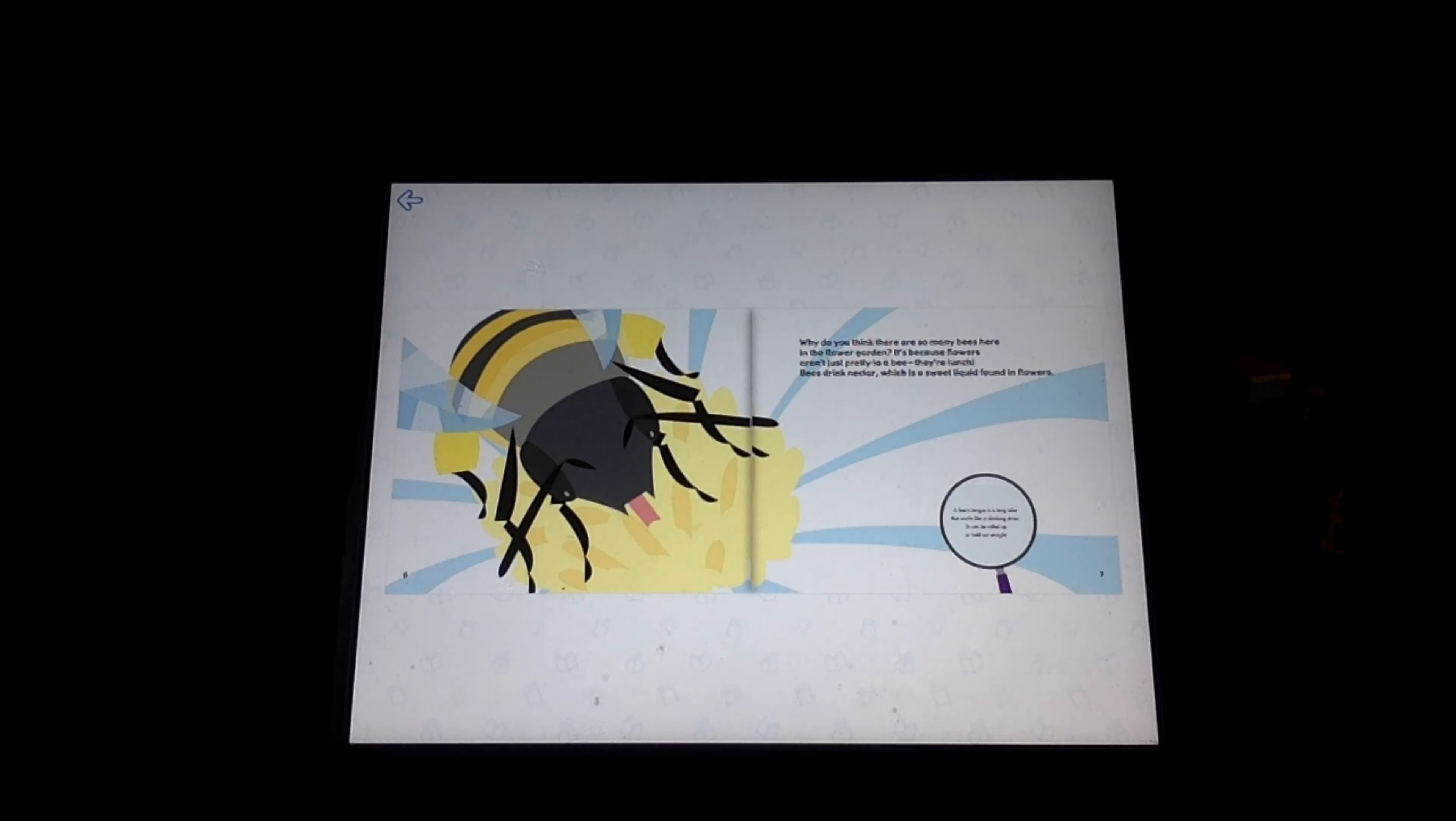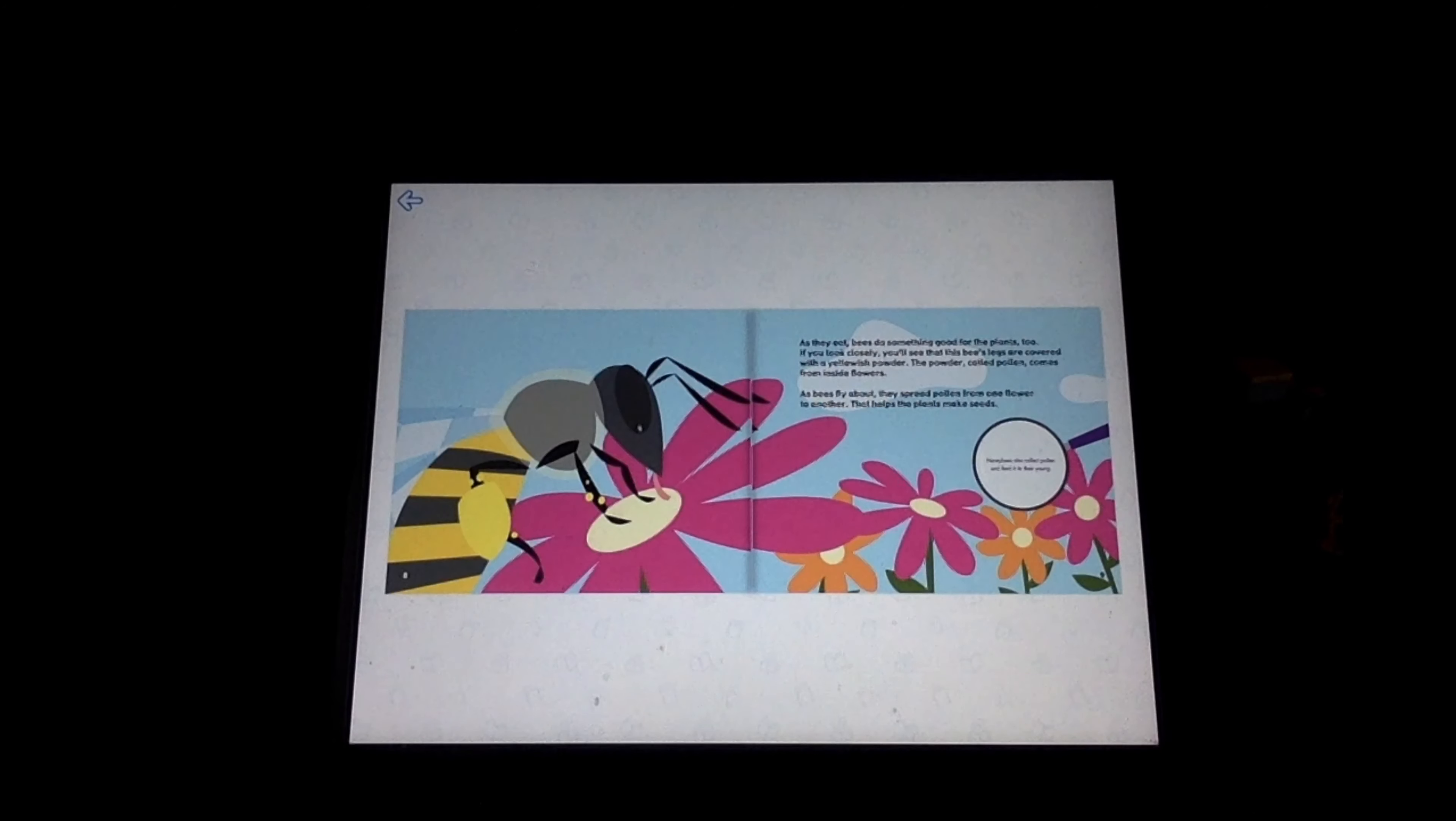Bees eat and drink nectar, which is a sweet liquid found in flowers. As they eat, bees do something good for the plants too. If you look closely, you'll see that this bee's legs are covered with a yellowish powder. The powder, called pollen, comes from inside the flowers.